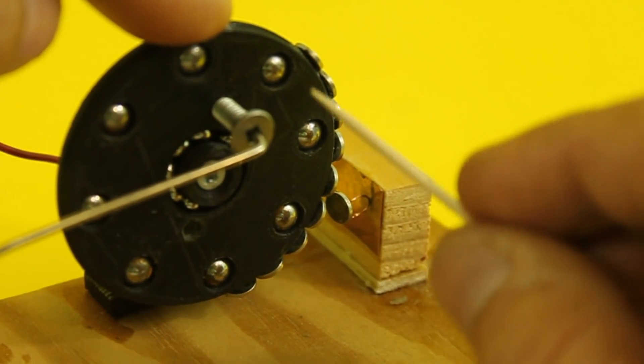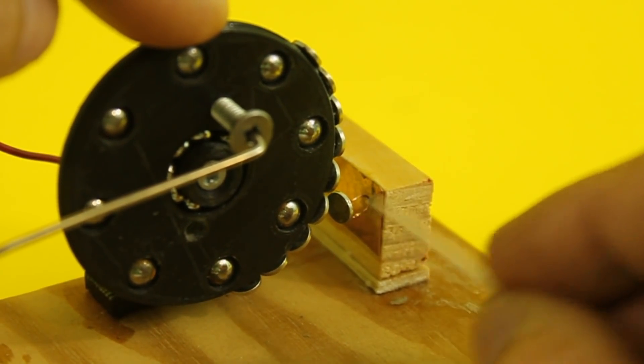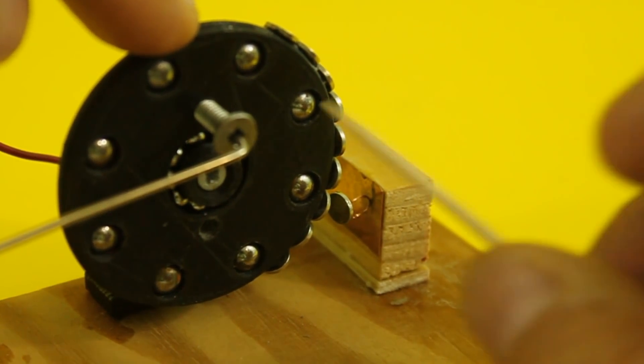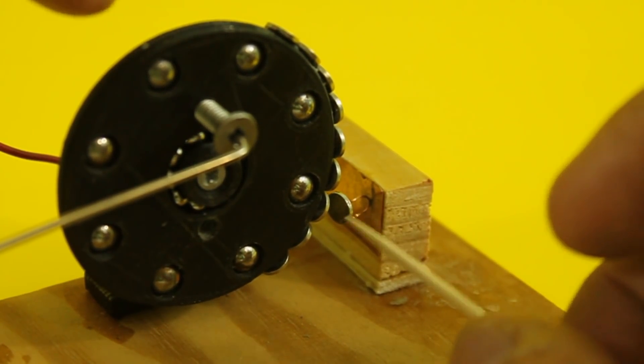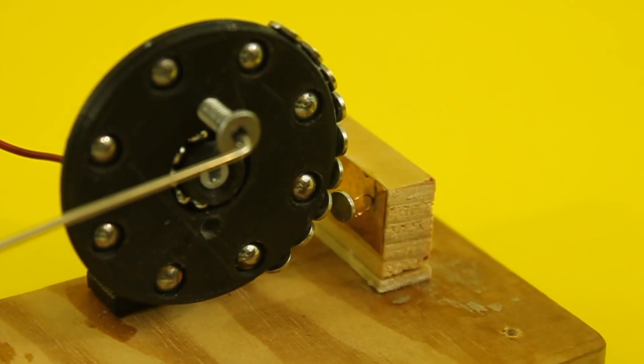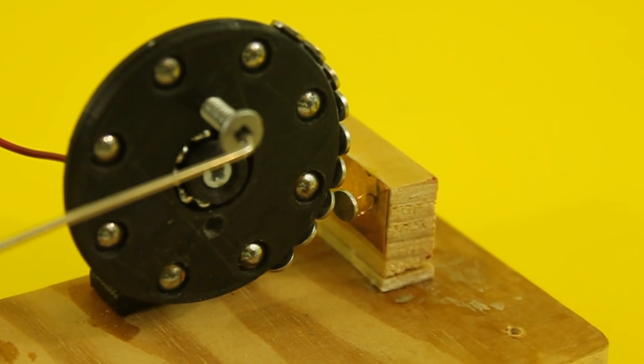It will be closed when all the magnets are passing near the switch. When all the magnets pass, the switch opens and the solenoid is no longer energized.